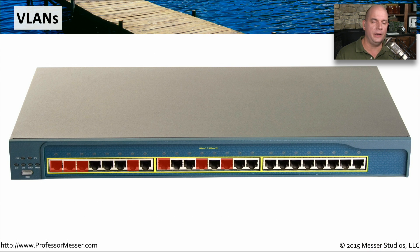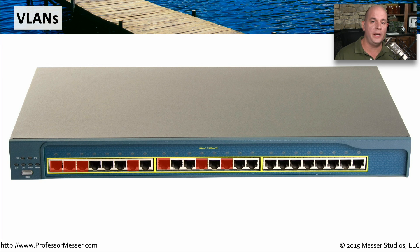When you're configuring the VLAN in your switch, you would look at all of the different interfaces, identify what users are connecting to what interfaces, and then configure the switch to put that user on a particular VLAN. VLAN numbers can range between 1 and 4,096, and very rarely are we using that many VLANs on an individual switch. In my example, I'm going to use four separate VLANs.